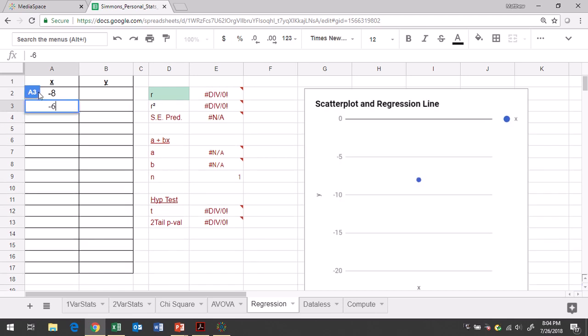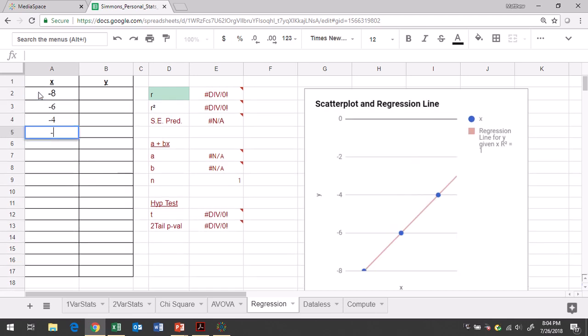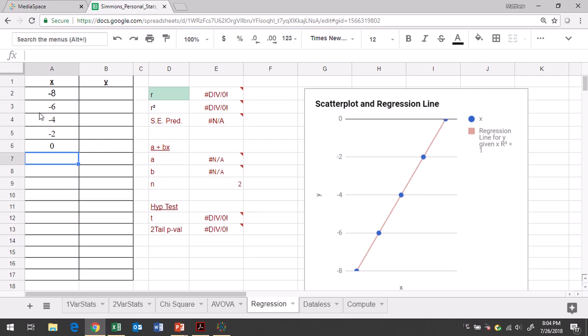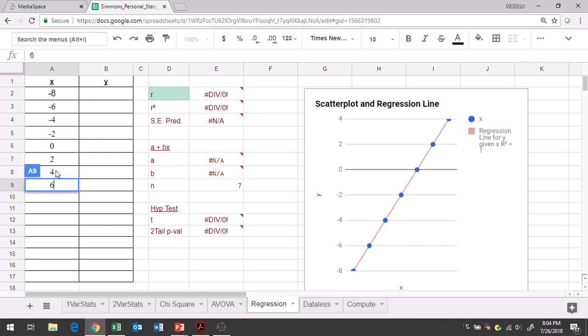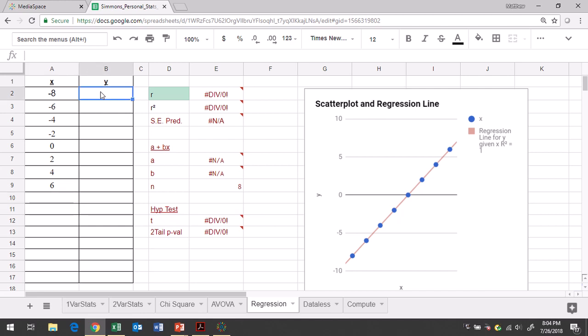Negative 8, negative 6, negative 4, negative 2, 0, 2, 4, 6. And then go ahead and start typing your y values in.